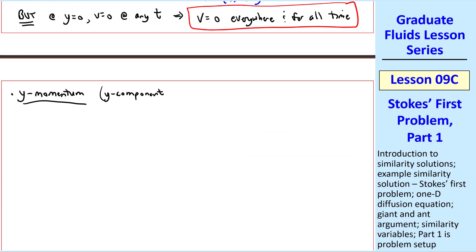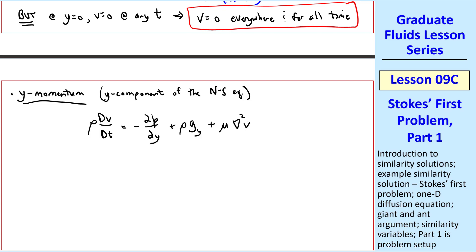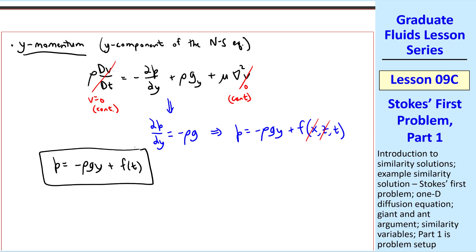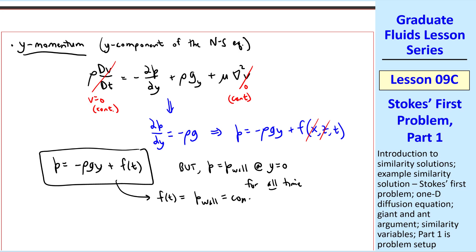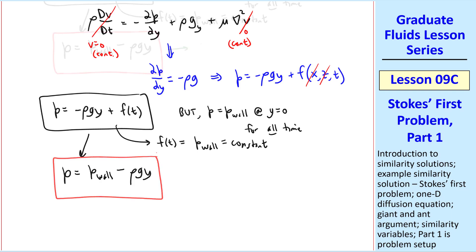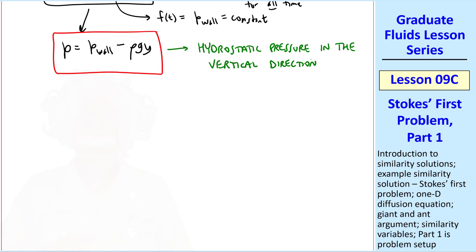Now let's look at the y-momentum component of the Navier-Stokes equation. Since v is zero by continuity, this reduces to del p del y equal minus rho g, which we can integrate to get p equals negative rho g y plus a function of x, z, and t. By the same arguments, nothing depends on x or z, so p equals minus rho g y plus a function of time only. Since pressure equals the wall pressure p_wall at y equals zero for all time, f(t) is p_wall, a constant. Therefore the pressure field is p_wall minus rho g y — hydrostatic pressure in the vertical direction.